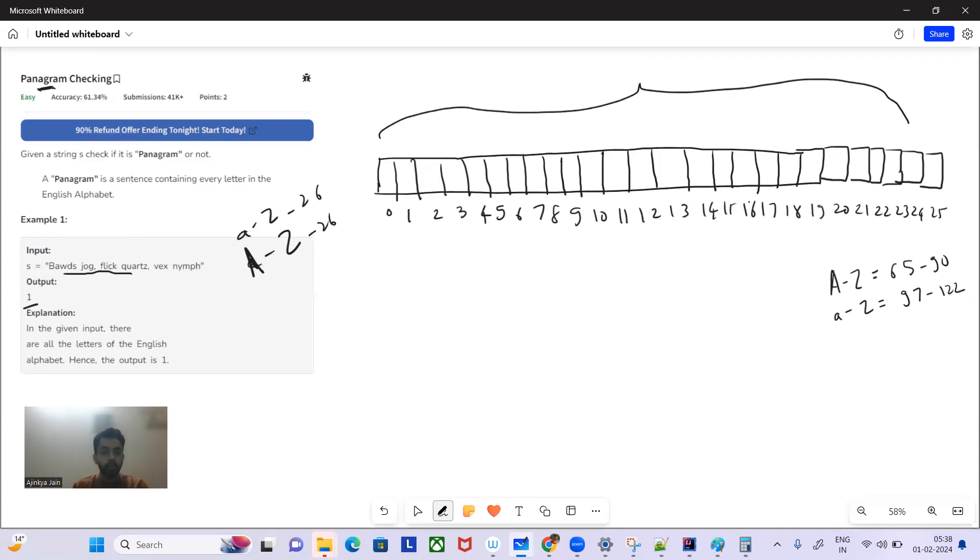So simply what we're going to do is we're going to iterate through each character of the string. And what we're going to do, for example, if the character is B, we are going to deduct the ASCII of capital A in order to give the index from 0 to 25.